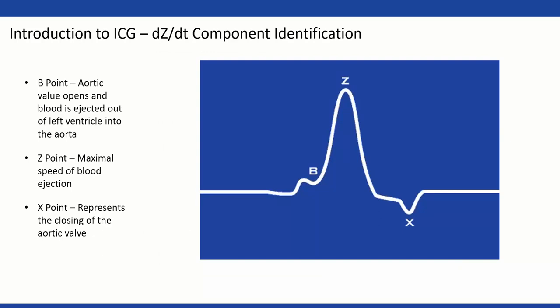A few common points on the dz/dt derivative: The B point is when the aortic valve actually opens up and blood is ejected from the ventricle into the aorta. The Z point is the maximal point of all that flow. Then the X point is basically the ending — if B was the beginning, X is when that valve actually closes and the cycle repeats.